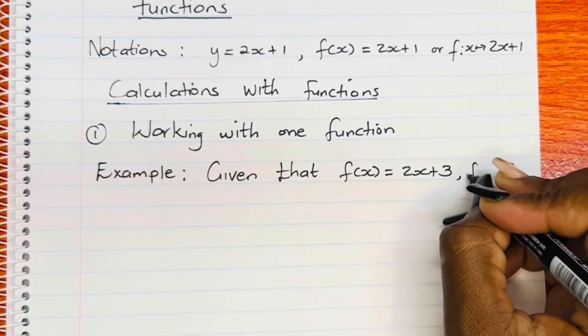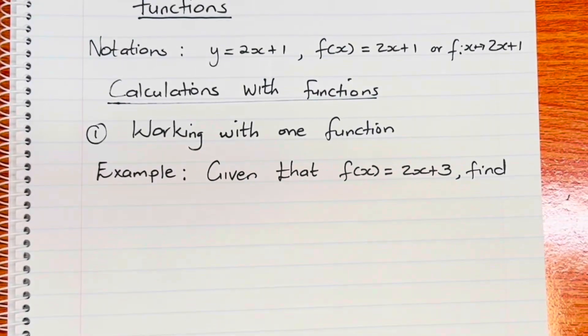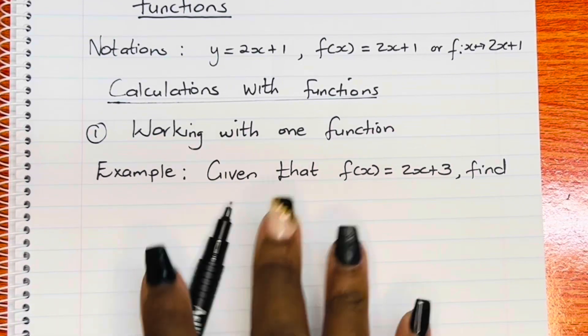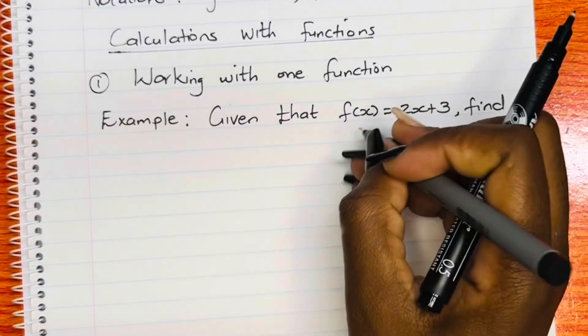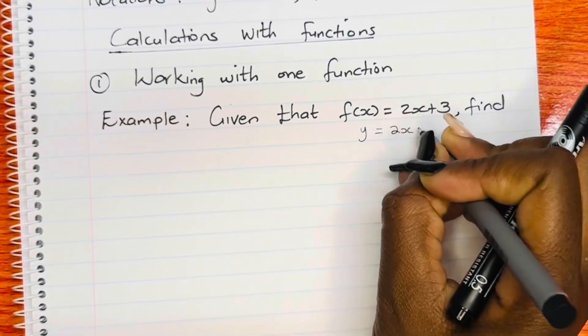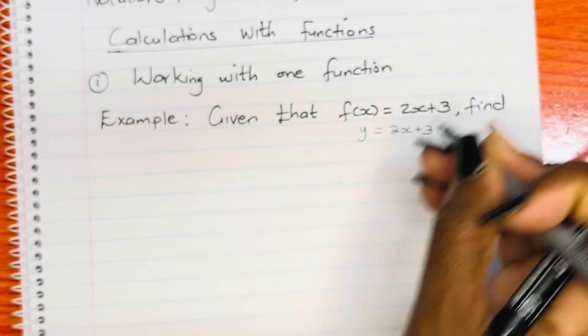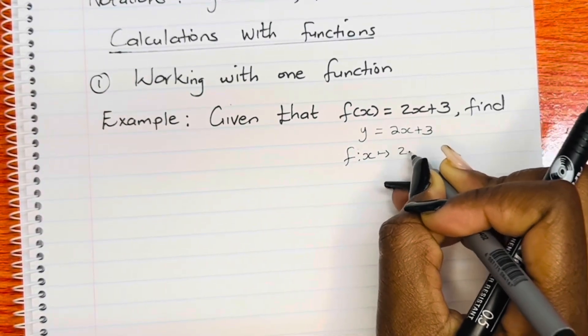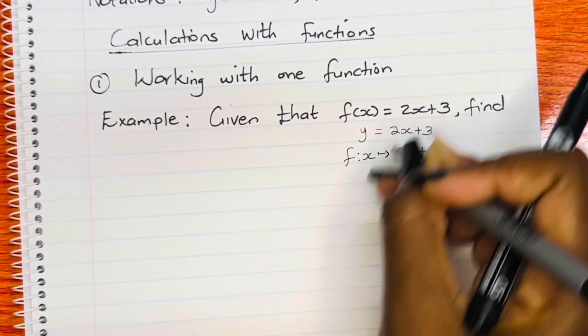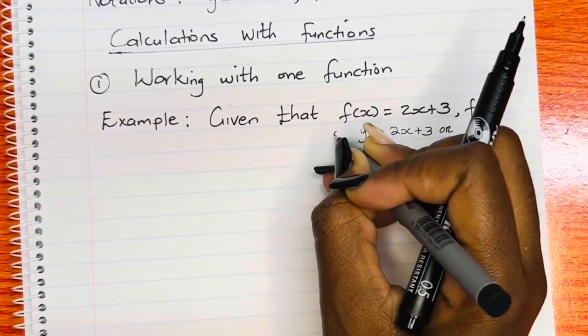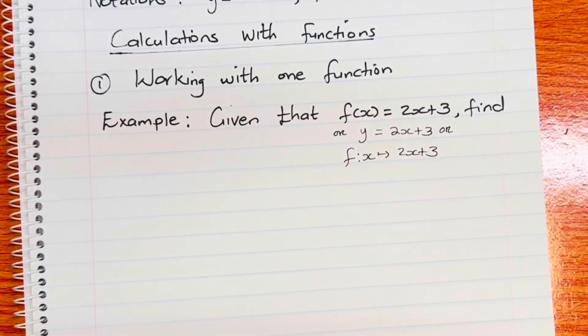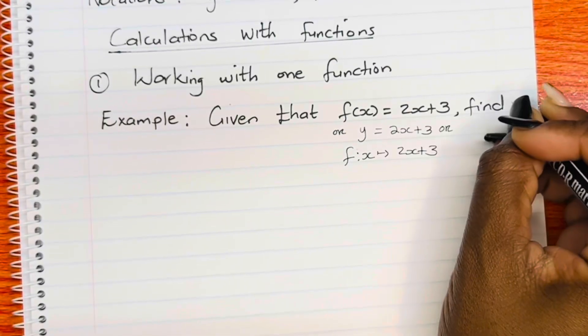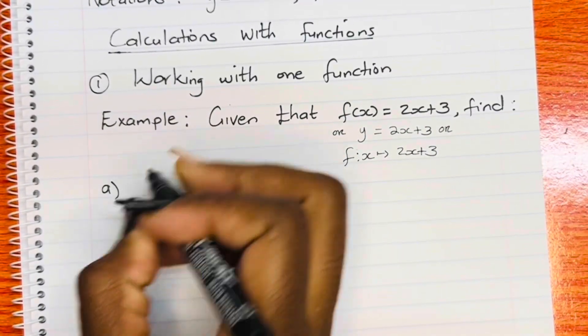For example, you are given that f of x is equal to 2x plus 3. Now the question is asking you to find. Before we proceed with what to find, we want to remind ourselves of the fact that this function could have been given to us as f of x equal to 2x plus 3, or it could have been given to us as y equal to 2x plus 3, or perhaps f of x is 2x plus 3, and it would mean exactly the same. So all these notations could have been used.